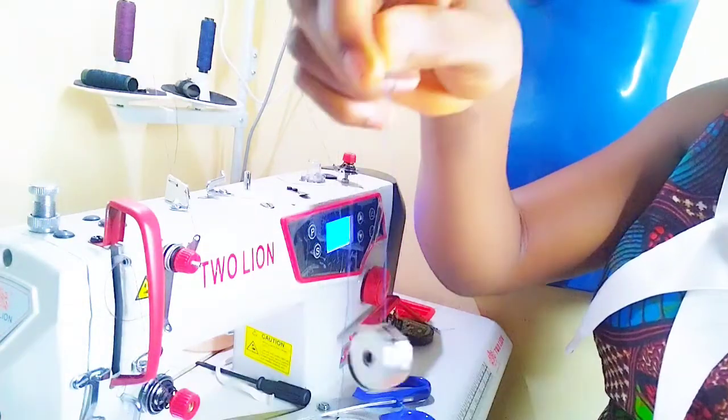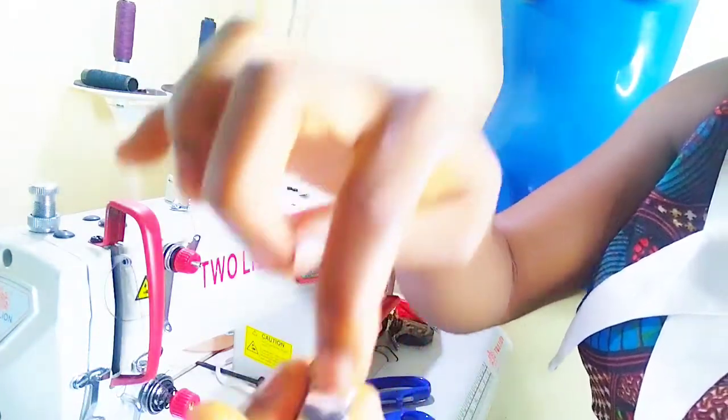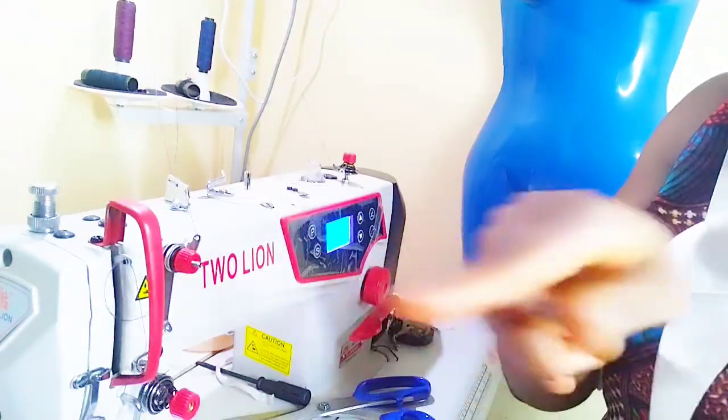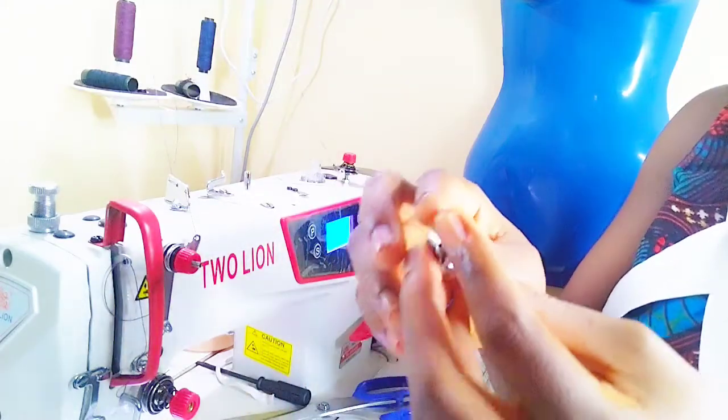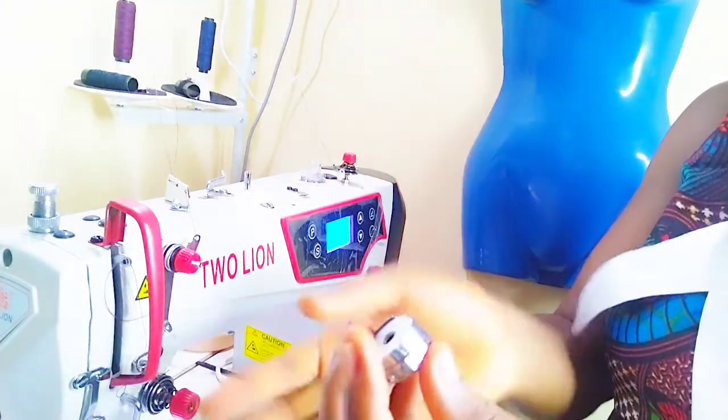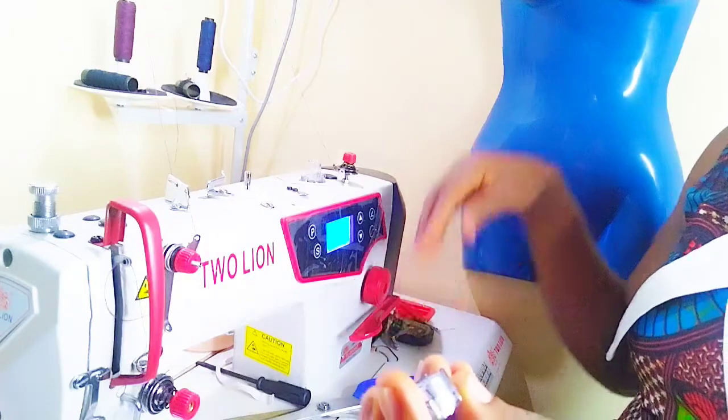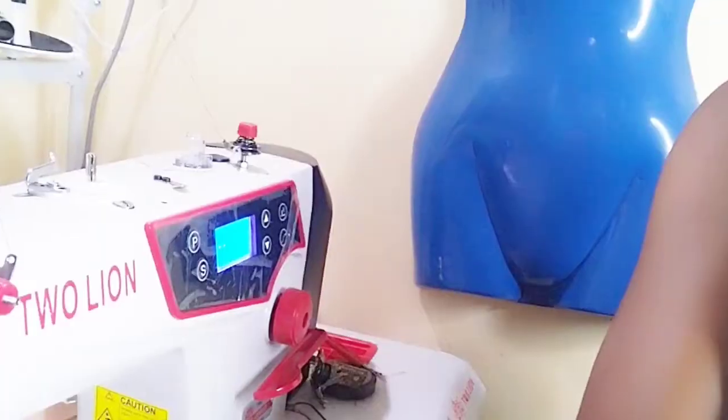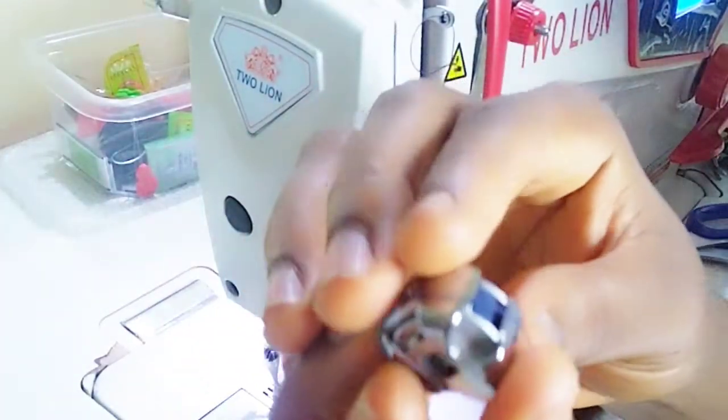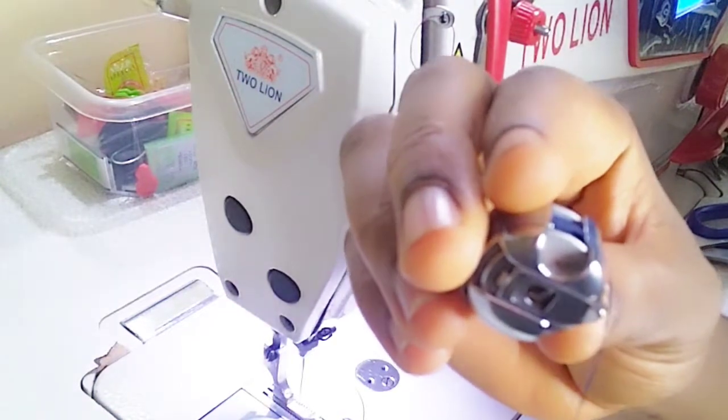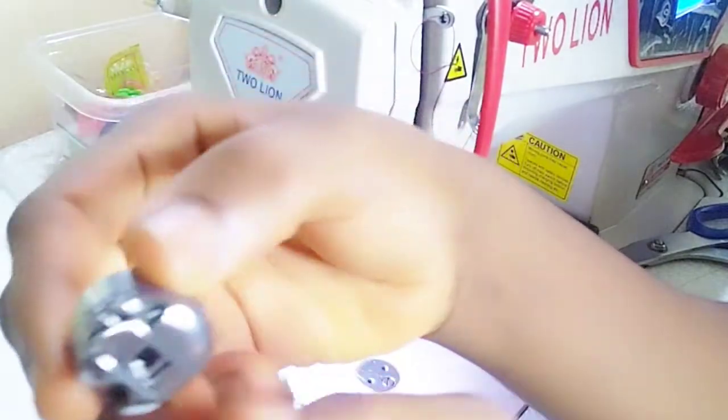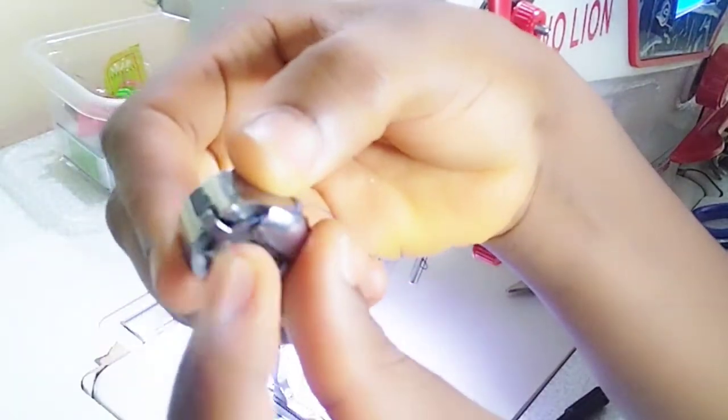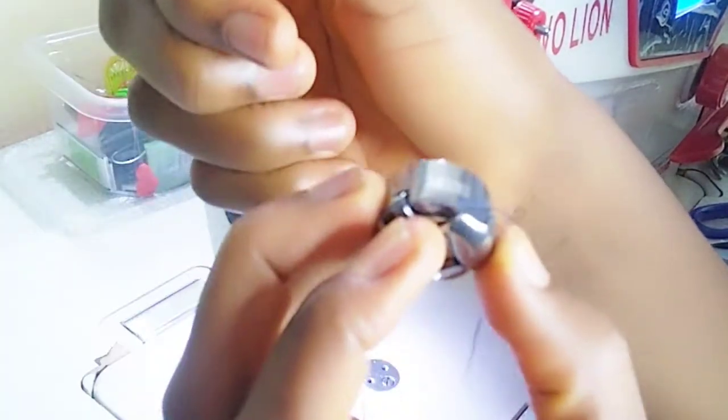All right, so we want to insert this into the bobbin case down there. Please pay attention, it's so easy. The normal black head machine most of the time is always like this, it faces the other side and you hold the knob like this, just insert your thread and you insert it easy, right? But this particular one, you don't need to hold the knob, just insert your thread and make sure it is this way.